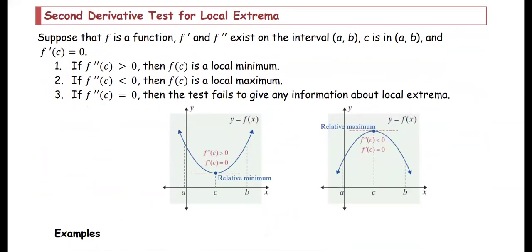Second derivative test for local extrema: suppose f is a function, f prime and f double prime exist on the open interval (a, b), and c is in the open interval (a, b) where f prime at c equals zero — that is, the slope of the tangent line at c is zero. If f double prime is greater than zero, then f(c) is a local minimum value. If f double prime is less than zero, then f(c) is a local maximum value.